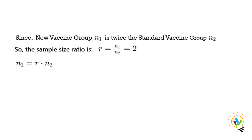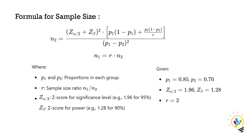We have two groups: the new vaccine group and the standard vaccine group. The new vaccine group sample size is n1 and the standard vaccine group sample size is n2. It is given that n1 is twice n2, that is the sample size ratio is 2, meaning n1 divided by n2 equals 2.